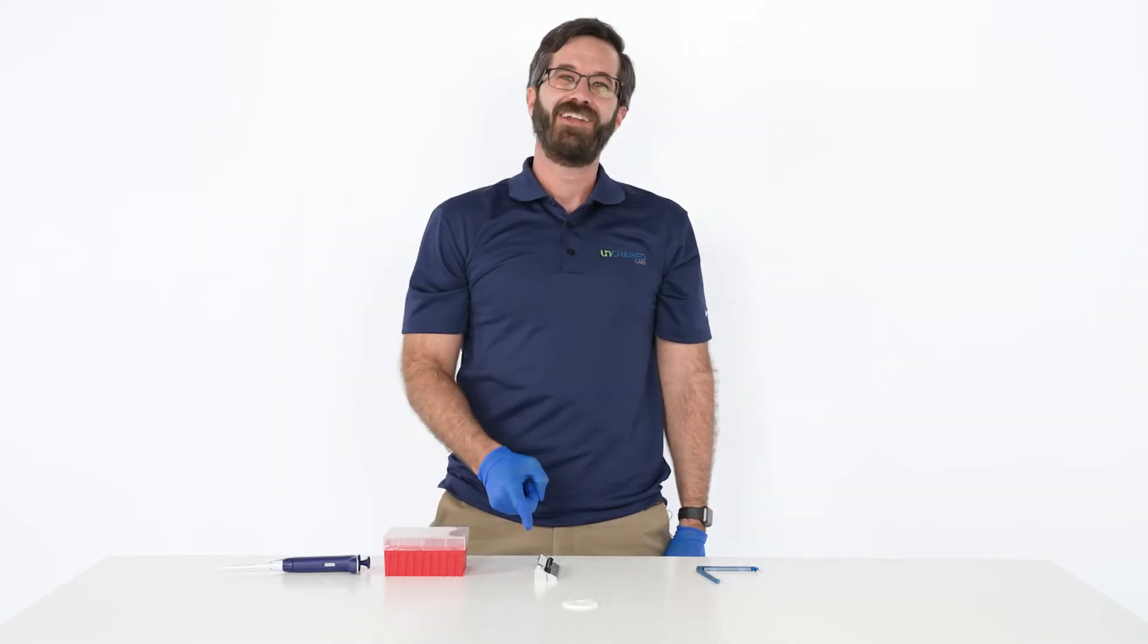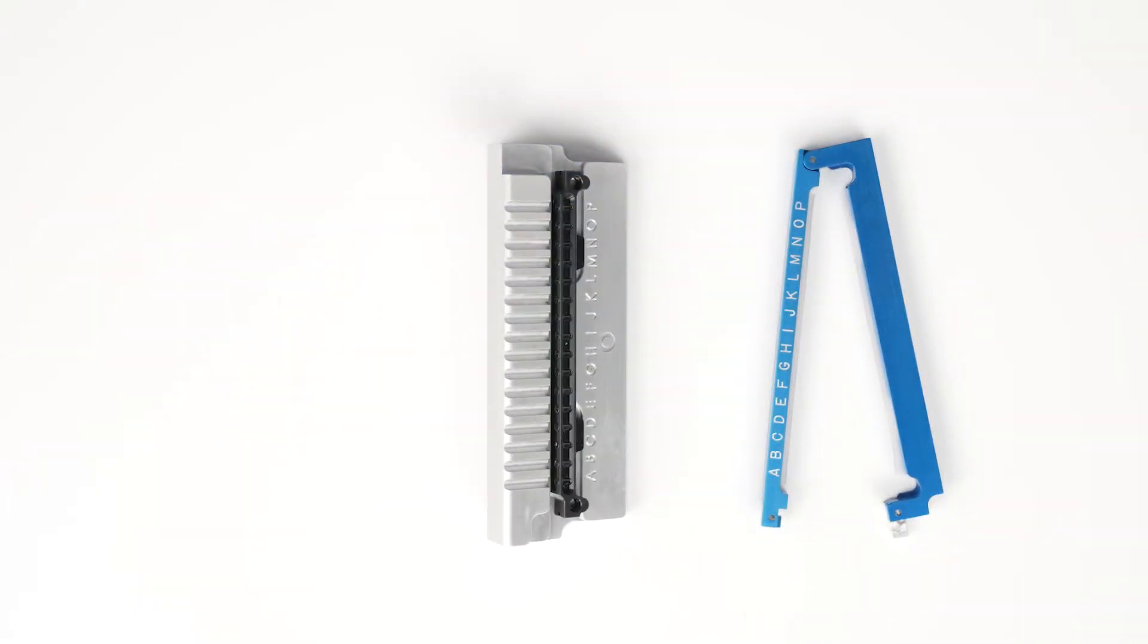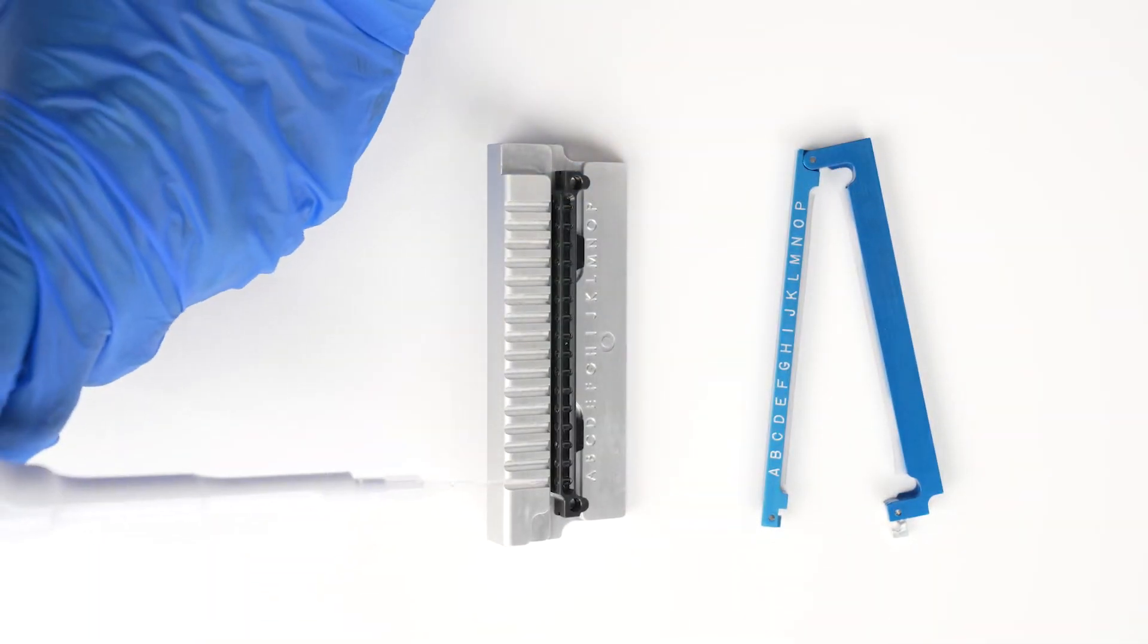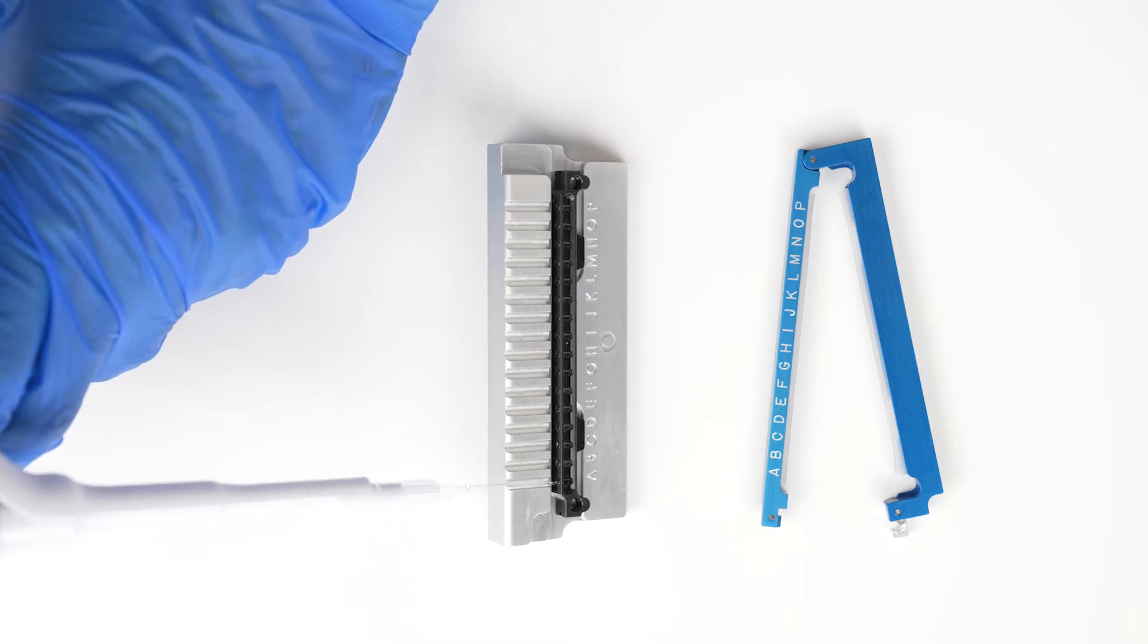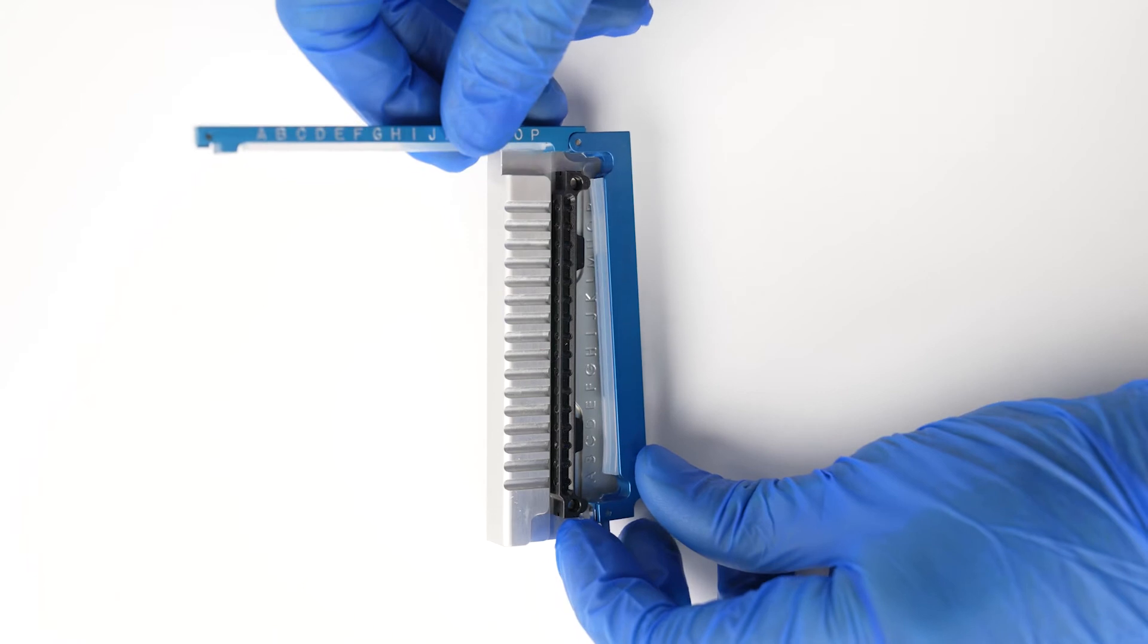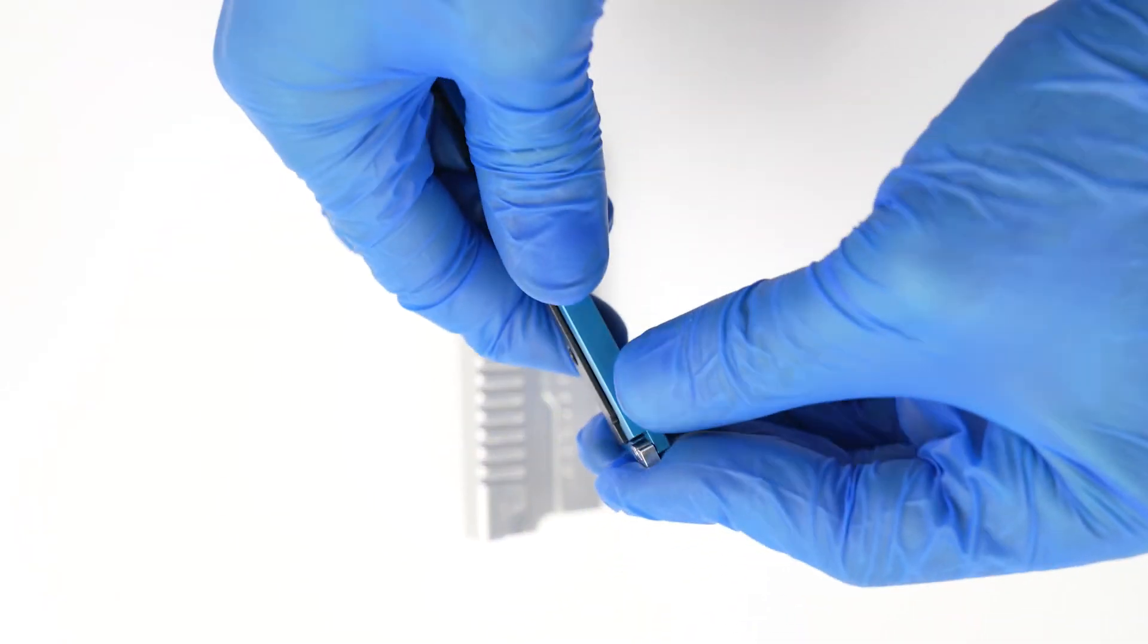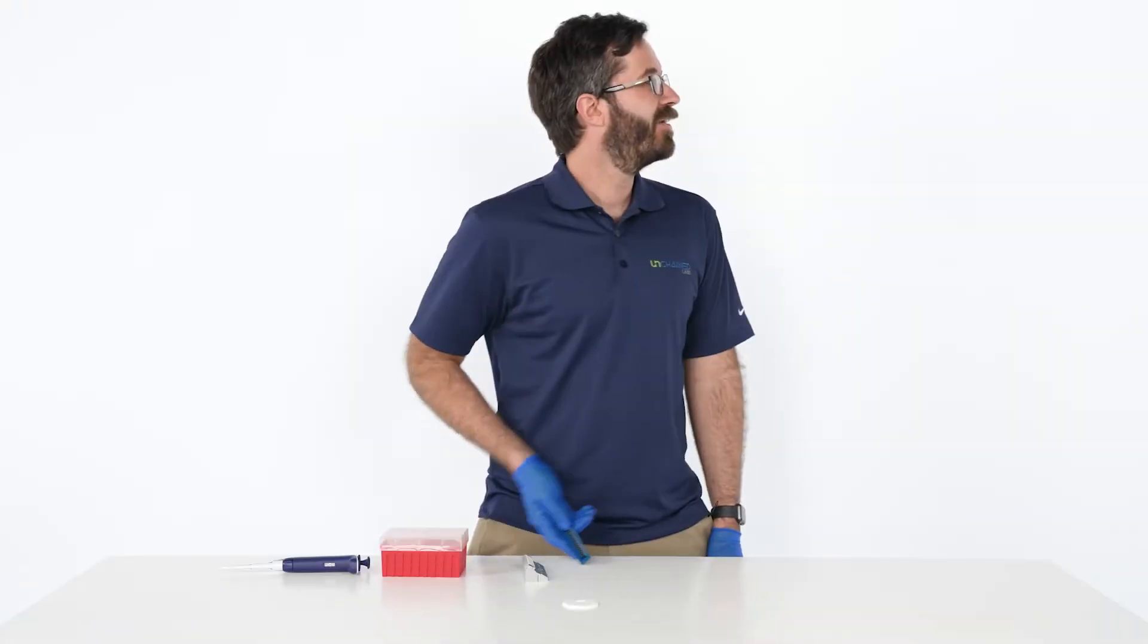Let's load up a uni and check out how an experiment works on UNCLE. Place the uni on the loading tool, pipette samples into one of the cuvettes, then clip the uni into a blue frame prepped with silicone gaskets to keep it sealed from evaporation.